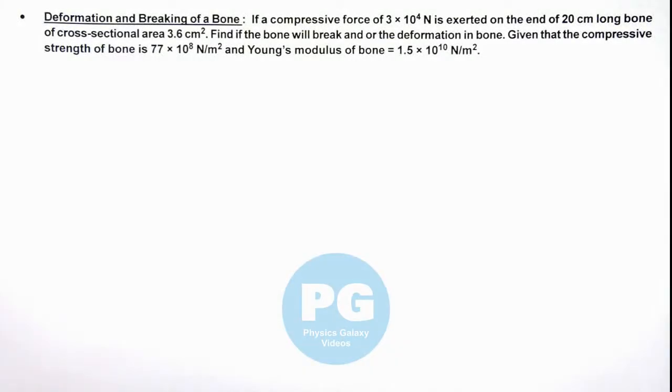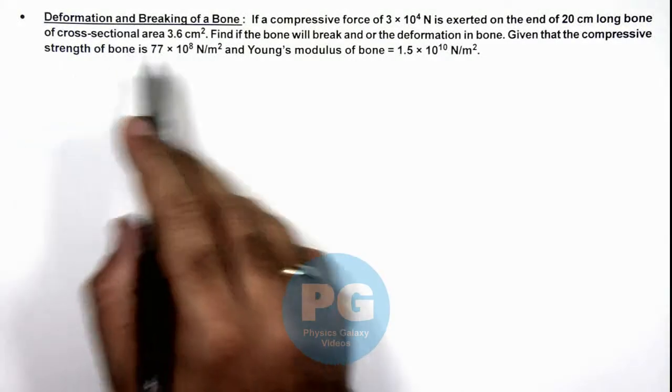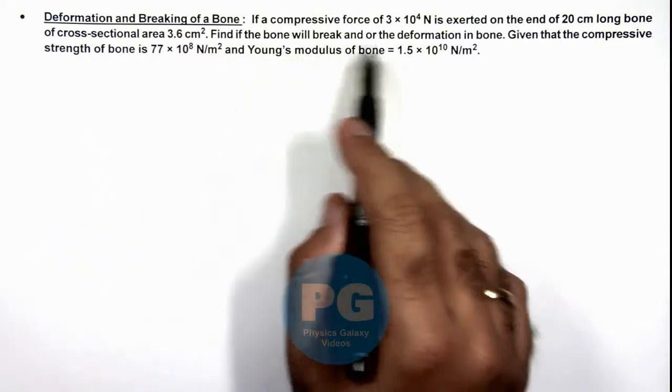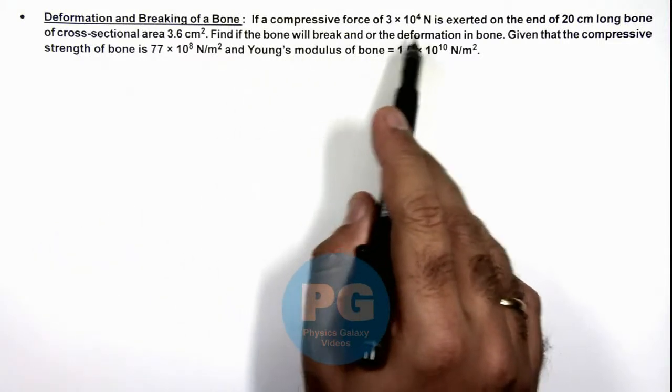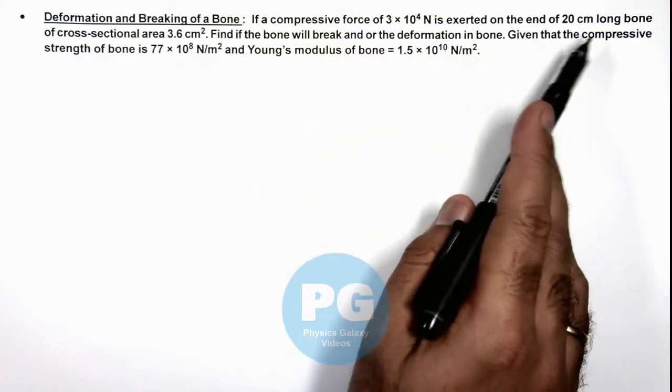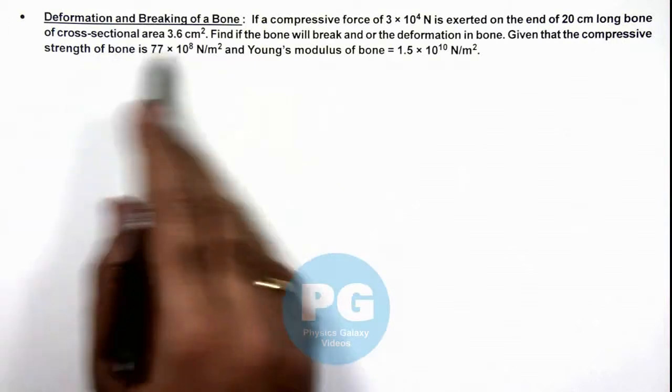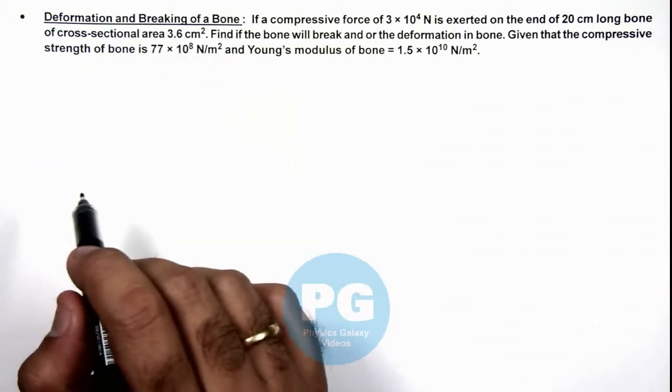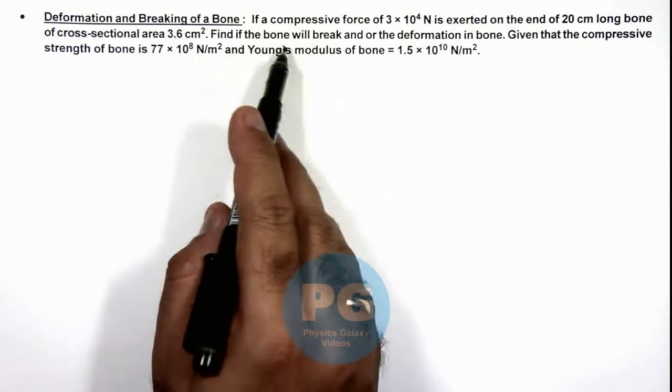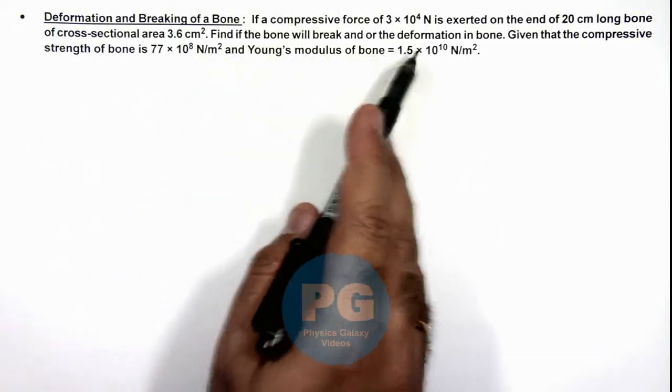In this illustration we'll analyze the deformation and breaking of a bone. We are given that if a compressive force of 3×10⁴ N is exerted on the end of a 20 cm long bone of cross-sectional area 3.6 cm², then we are required to find if the bone will break or the deformation in the bone.